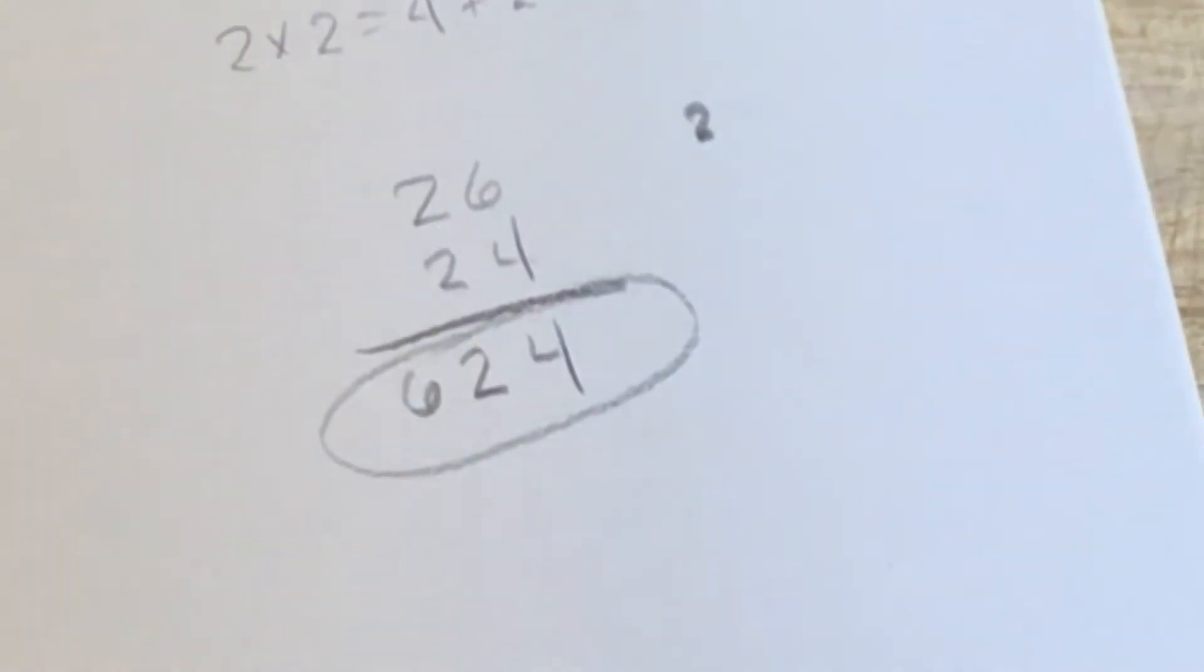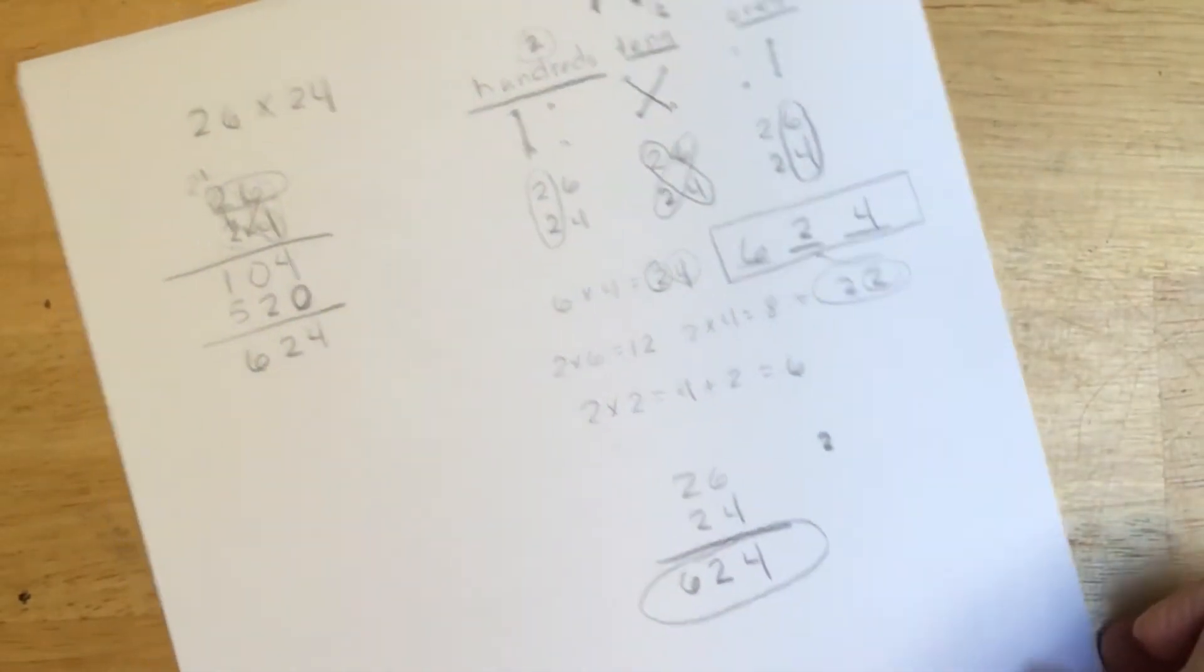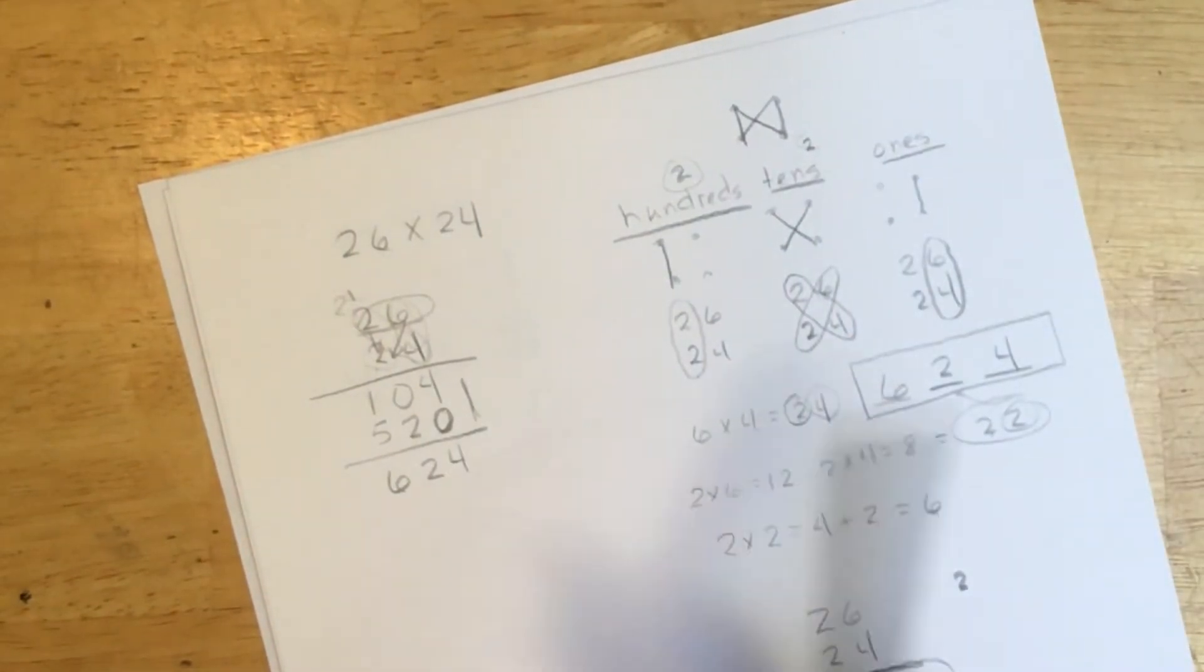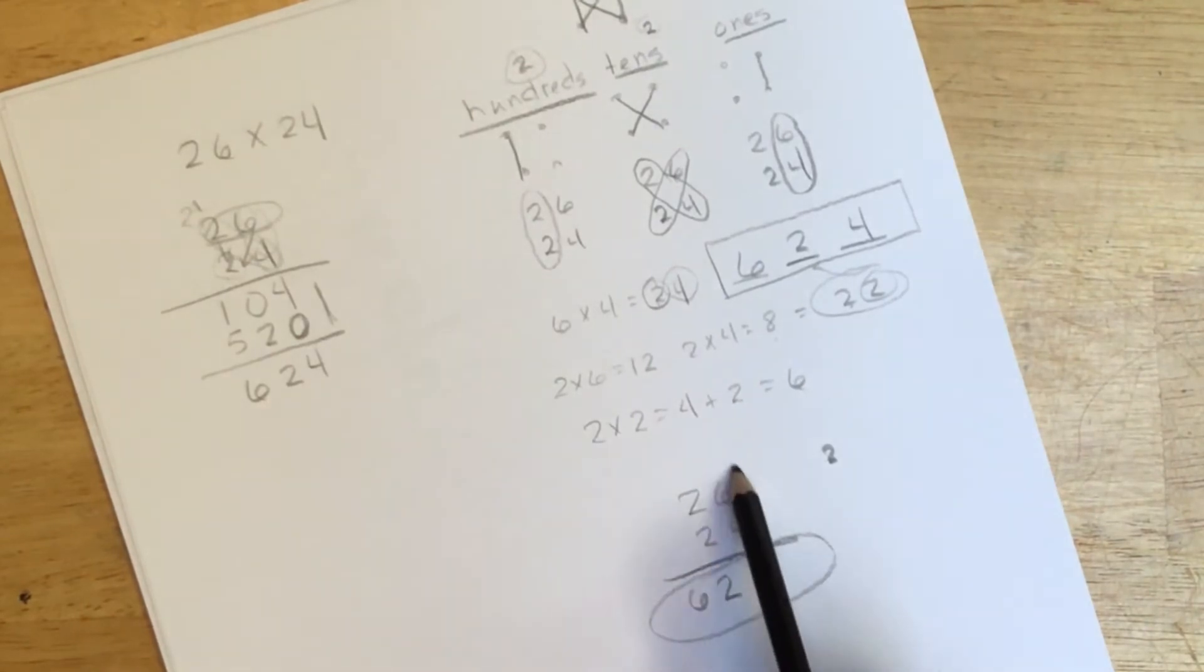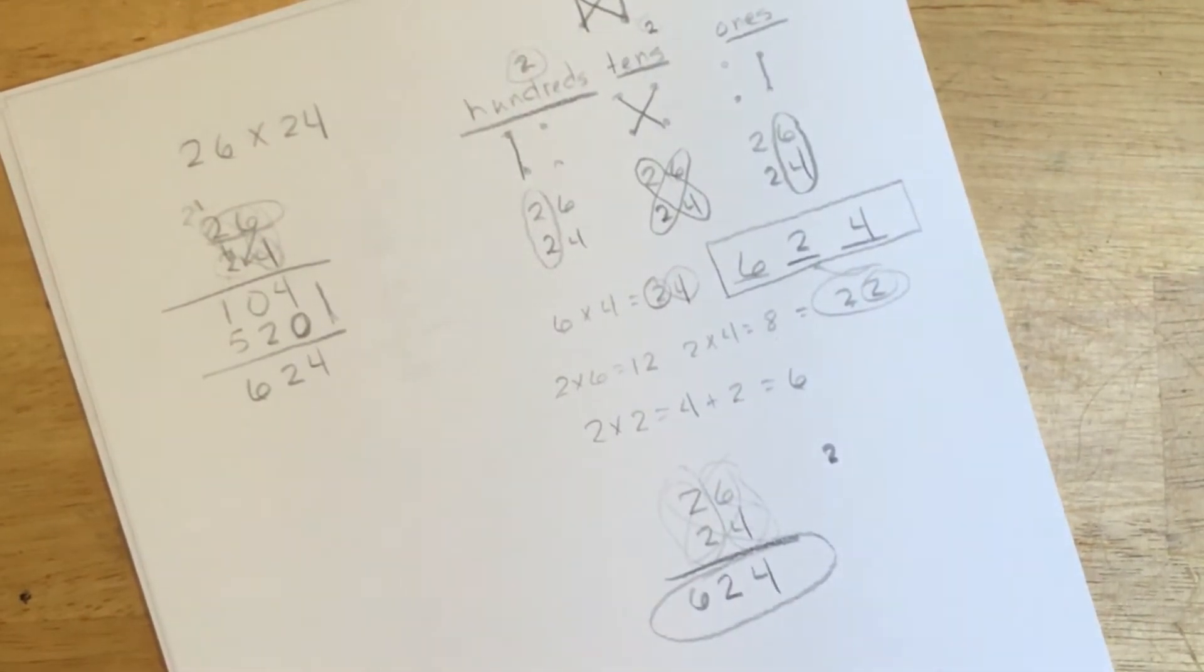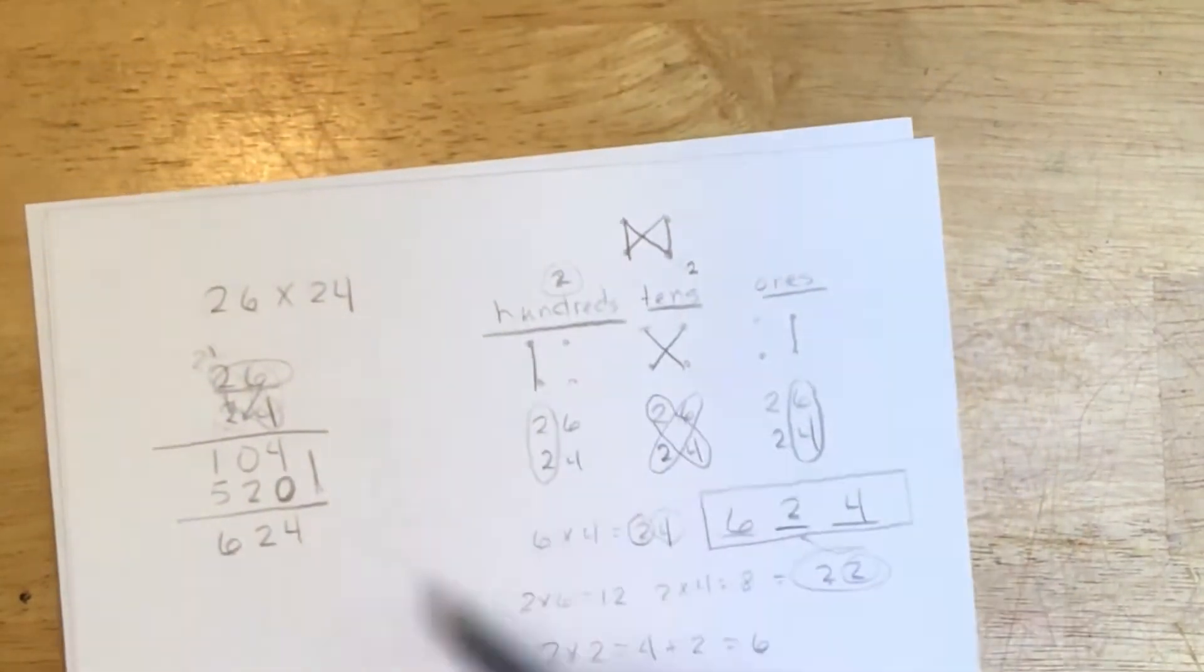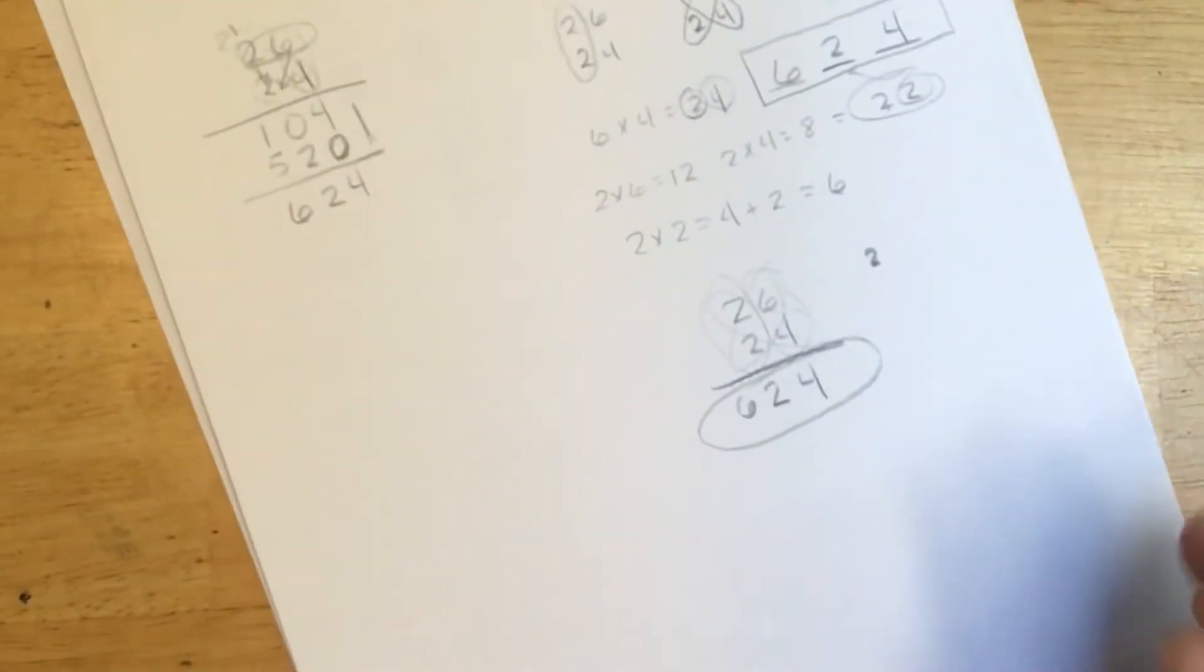Not only is it more efficient on paper, I don't have these two lines here in the multiplication process, but it's also easier and more efficient in the mind as well. So this is called the Vedic method. Let's quickly go over three digit numbers.